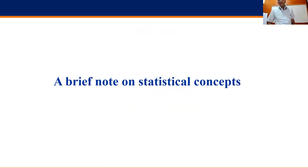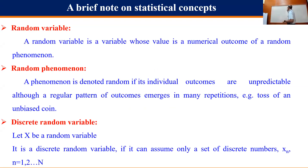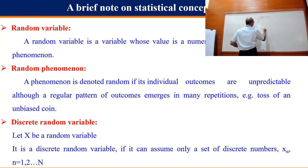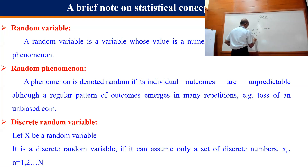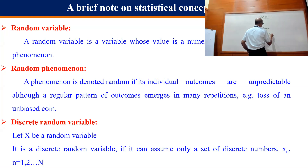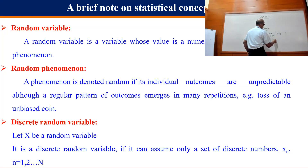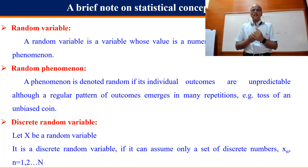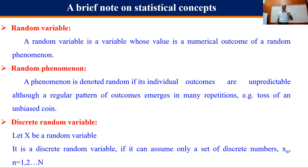A brief note on statistical concepts — this is where we started last week. A random variable — this could be discrete or continuous. Tossing a coin can only be heads or tails, so it is discrete. Rolling a dice gives one through six. Continuous variables like rainfall or temperature can take any value.